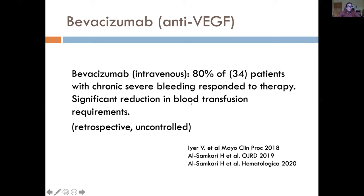Before moving to liver — bevacizumab is not a first-line treatment for everyone with nosebleeds or HHT-related GI bleeding. It's a treatment for severe disease. It's quite a specialized therapy with its own risks, and should be given in an expert HHT center or with guidance from one. The guidelines will discuss risks and benefits. The key point is this therapy should be reserved for severe cases and administered with expert oversight.